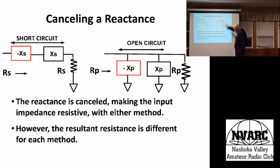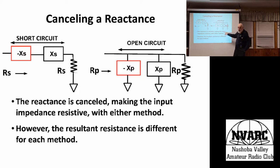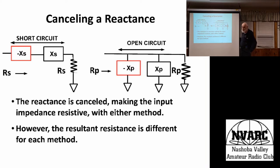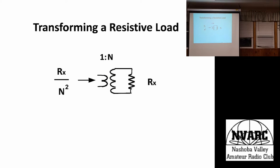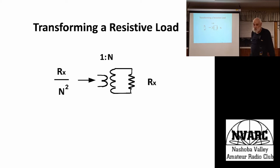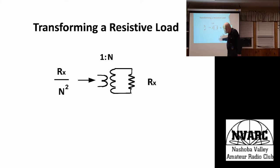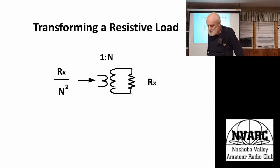You could also take your parallel equivalent and put the negative of that reactance in parallel — those two produce an open circuit and the resistance you see looking in is the parallel resistance. These are two different values of resistance. To take a resistance and transform it to a different resistance, you use things like transformers, auto-transformers, and baluns — for example, a one-to-one balun or a four-to-one balun, which you can turn around to get a one-to-four.